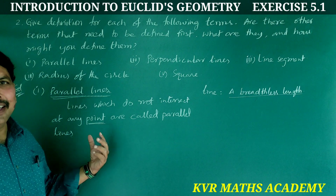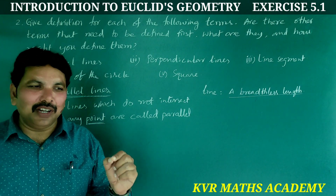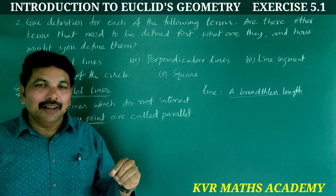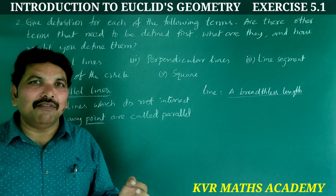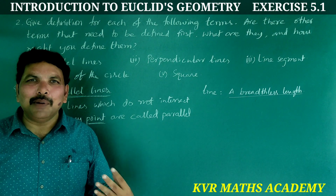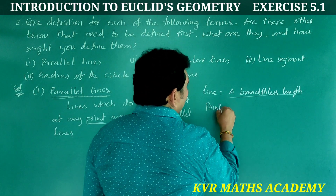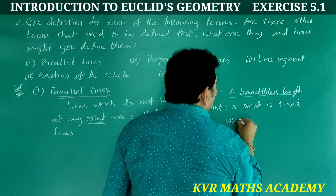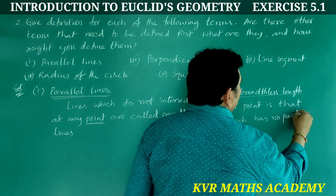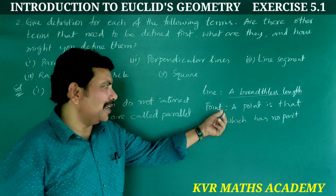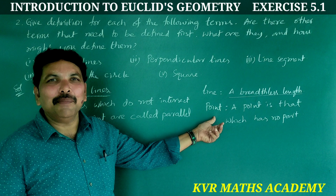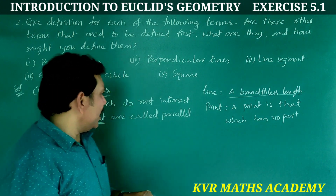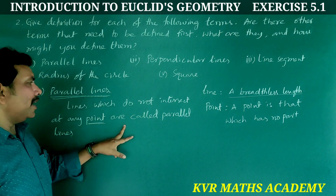What is a point? With the sharp tip of a pen or pencil, mark a dot on your notebook — that will be an idea of a point. According to Euclid's definition, a point is that which has no part. So for parallel lines, we need to define: line, point, and intersect. Lines which do not intersect at any point are called parallel lines.